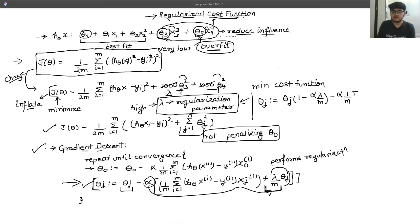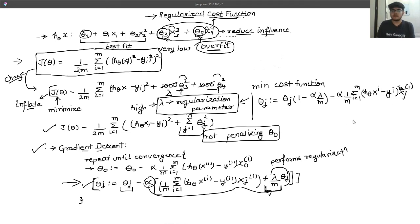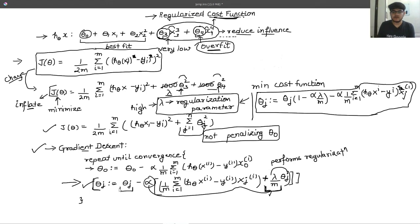Then we write the remaining term: (1/m) times the sum from i=1 to m of (h_theta(x^i) - y^i) times x_j^i. On simplification, we have not done anything major — we have just taken theta j common from these two terms and written 1 minus alpha times lambda/m.